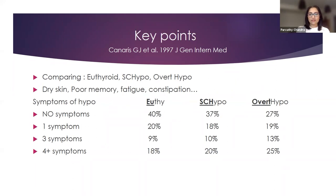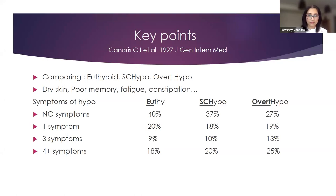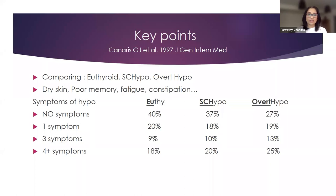Canaris distributed a questionnaire to a large group of people — this is the Colorado study, about 25,000 people. They categorized people into euthyroid, subclinical hypothyroid, and overt hypothyroidism based on TSH levels. The symptoms they looked at were dry skin, poor memory, fatigue, constipation, weight gain, and so on. What they reported was that 40% of euthyroid people — those with normal thyroid function tests — had no symptoms of hypothyroidism. That means about 60% of euthyroid people had one or two symptoms of hypothyroidism.